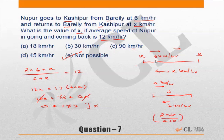Some of you may have an issue with the formula — how does it get derived? If the distance is d and it is the same in both directions, average speed is nothing but total distance upon total time. Total distance in this case is d kilometers going and d kilometers coming back, so the total distance is 2d.